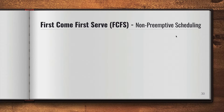Hello and welcome everyone. In this video we are going to talk about the first come first serve scheduling algorithm. This is a non-preemptive scheduling algorithm, which means that when the process starts executing and goes from a ready state to the running state, it is going to finish its execution — it will not be stopped or interrupted in between.